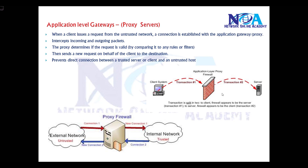There is another feature called application level gateways. Most firewalls may or may not support it. In application level gateways, the client issues a request from a trusted network and the connection is actually established by the gateway. In another way, we can also call them proxy servers.